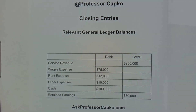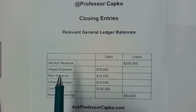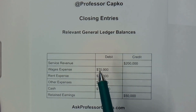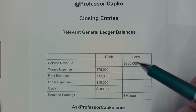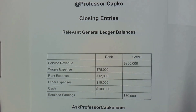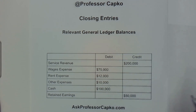Today we're going to perform some closing entries. These are usually done at the end of the period, maybe the end of the year, and it closes out your temporary accounts such as your revenue accounts and your expense accounts, closing them out to retained earnings. I just have some example accounts here — obviously there may be many more accounts that you're closing, but you will get the idea by following along.